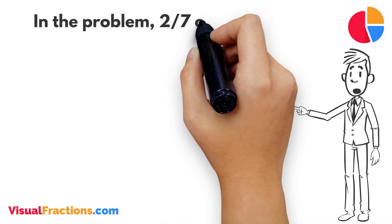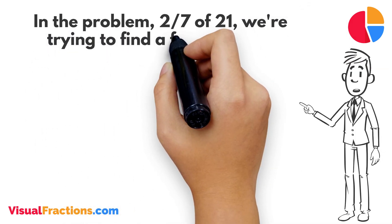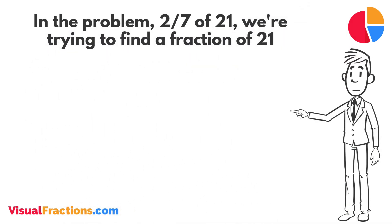In the problem 2/7 of 21, we're trying to find a fraction of 21. Since we're only taking a part of it, we know our answer will be less than 21.